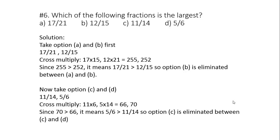First we will take options A and B: 17 by 21 and 12 by 15. Then we will cross multiply. We get 17 into 15 and 12 into 21, so that will be equal to 255 comma 252. Among these two numbers, 255 is larger, so it means the first fraction 17 by 21 is greater than 12 by 15. Hence option B, 12 by 15, is eliminated. We do the same with option C and D. Options C and D are 11 by 14, 5 by 6. Again we cross multiply: we get 11 into 6, 5 into 14, that is 66 comma 70. Because 70 is larger, option C, 11 by 14, is eliminated.